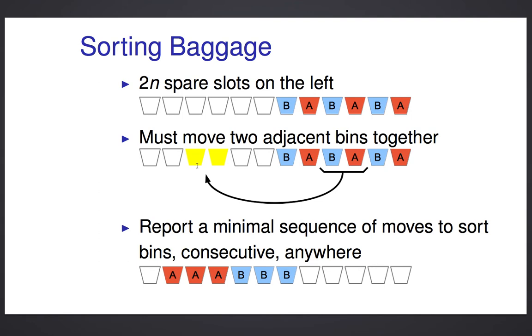Now, to sort these, you've got a few things you can work with. If you've got N bins for A and N bins for B, you've got 2N more spare spaces on the left, where you can use as extra space as you rearrange the bins.